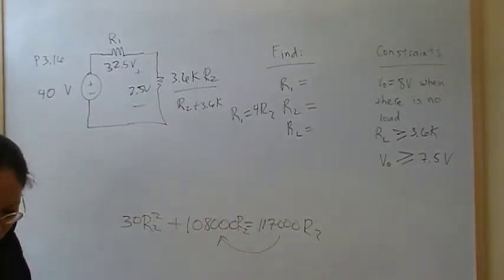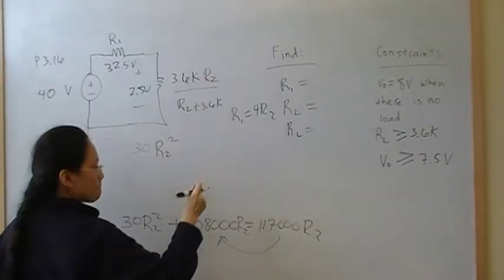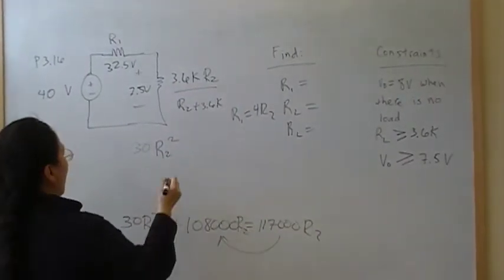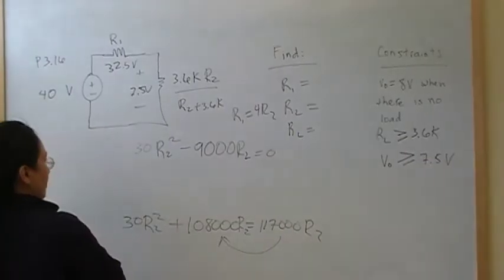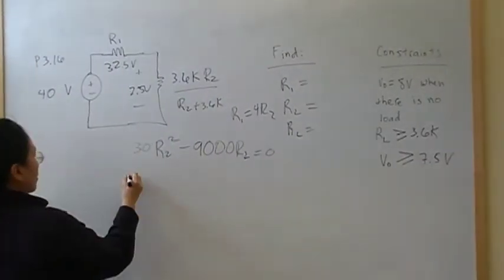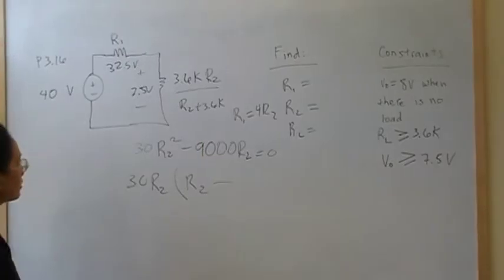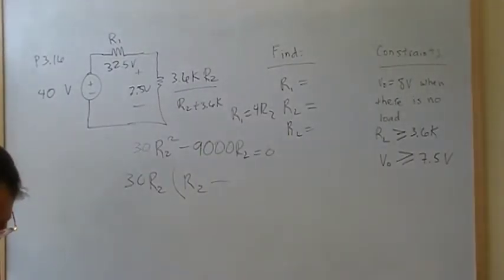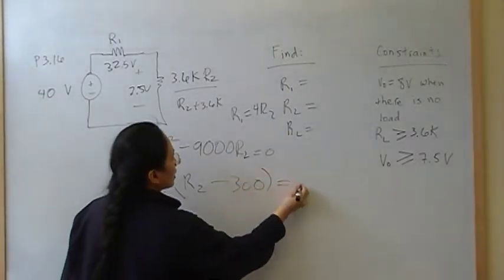Bring this over here: 108K minus 117K. This is going to give me 30 R2 squared minus 9000 R2 is equal to zero. Factor out 30 R2 to leave me R2 minus 9000 divided by 30 is equal to zero.